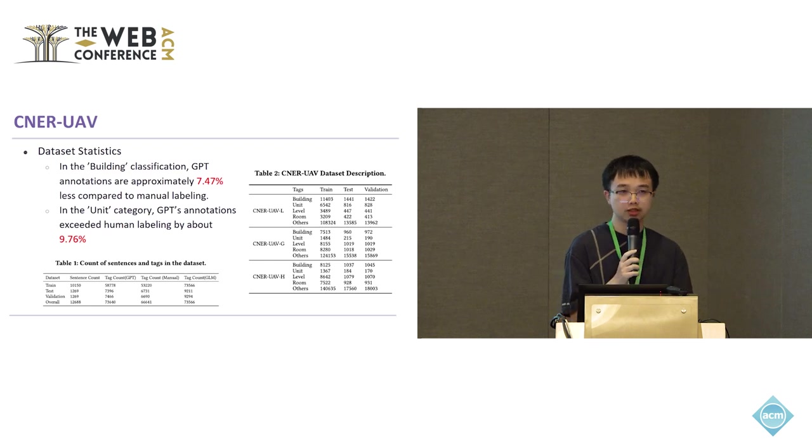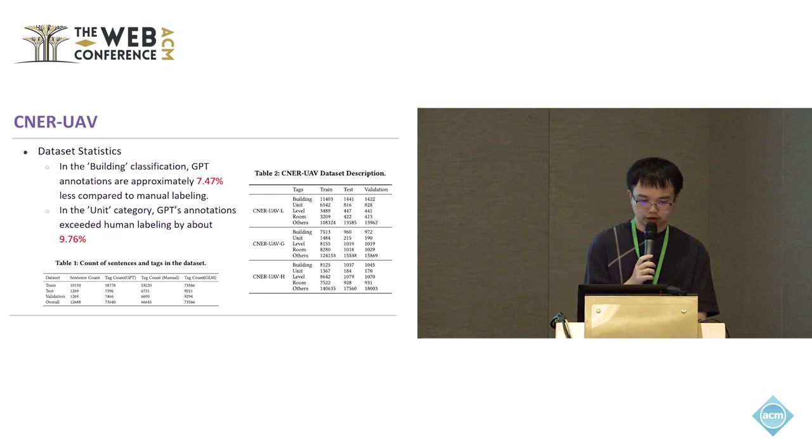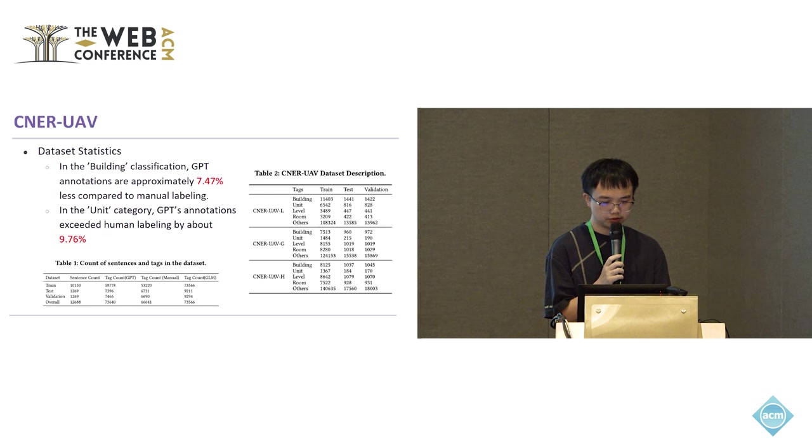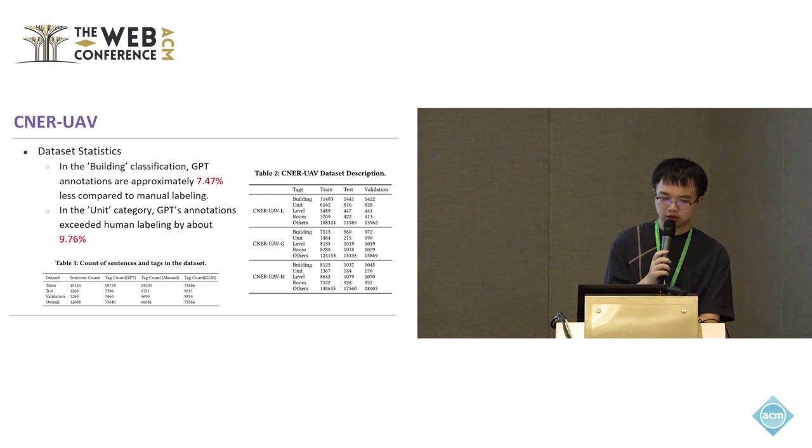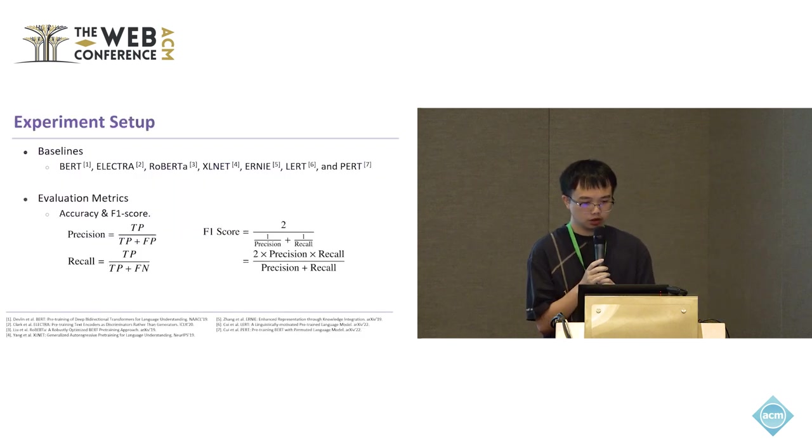Table one presents an overview of the sentences and tags within our dataset, and table two shows the statistics of different labels in three subsets. We observe from the table that in the building classification, GPT annotations are approximately 7.47% less compared to manual labeling. Conversely, in the unit category, GPT's annotations exceeded human labeling by about 9.76%. These disparities suggest a potential oversight in specific unit labels by GPT, potentially arising from a deficiency in relevant knowledge and an inherent limitation within the model.